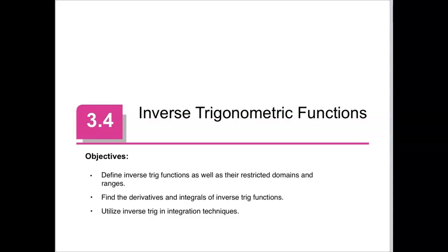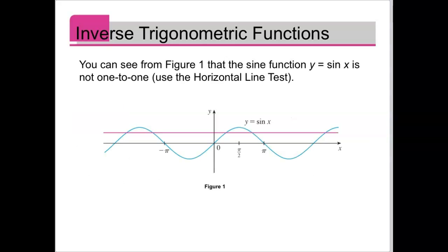We are still talking about inverse trig functions. We did the definition and the derivative of inverse sine, but I'm going to do a brief review of the general idea. For a function to have an inverse it has to be one-to-one, meaning it has to pass the horizontal line test, which none of the trig functions do because they're periodic — they repeat themselves over and over again. So to discuss inverse trig, we restrict the domain.